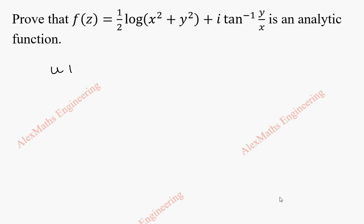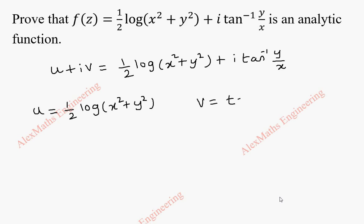This is u plus iv which is equal to the entire function half log of x square plus y square plus i tan inverse y by x. Now, equating real part on both the sides, u is half log x square plus y square and v is tan inverse y by x.